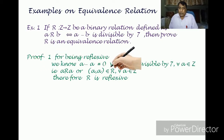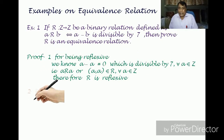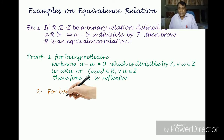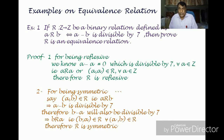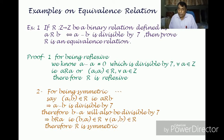Secondly, we have to prove that the given relation is symmetric. For being symmetric, let ordered pair (a, b) belong to R — that is, a is related to b. If a is related to b, then according to the rule of the relation, a minus b is divisible by 7. Since a minus b is divisible by 7, b minus a will also be divisible by 7. This implies b is related to a — that is, ordered pair (b, a) belongs to R. Therefore R is symmetric.